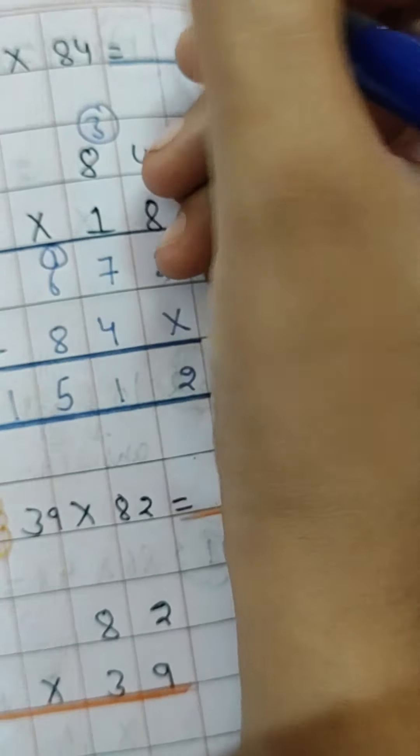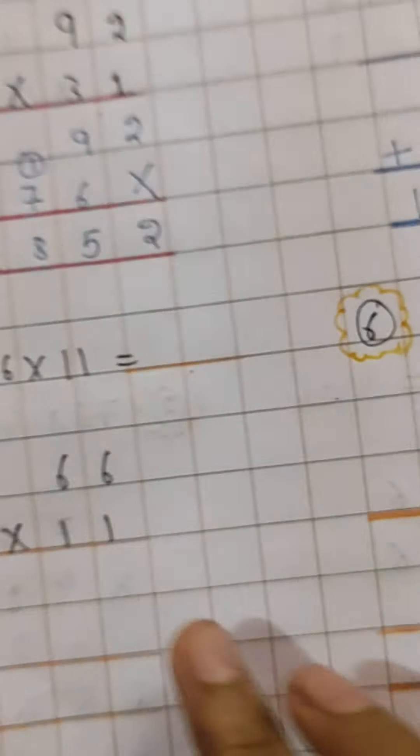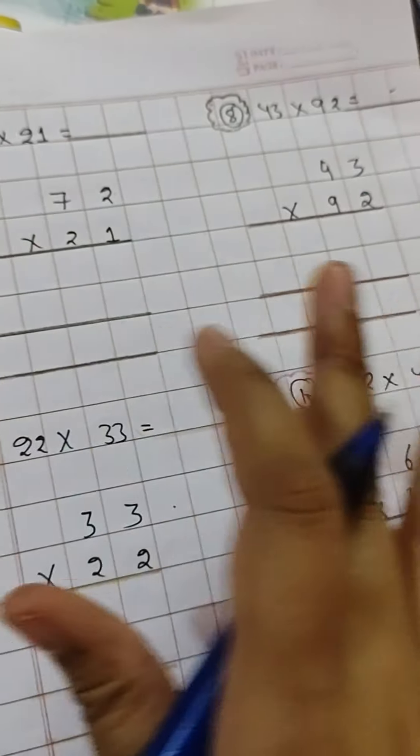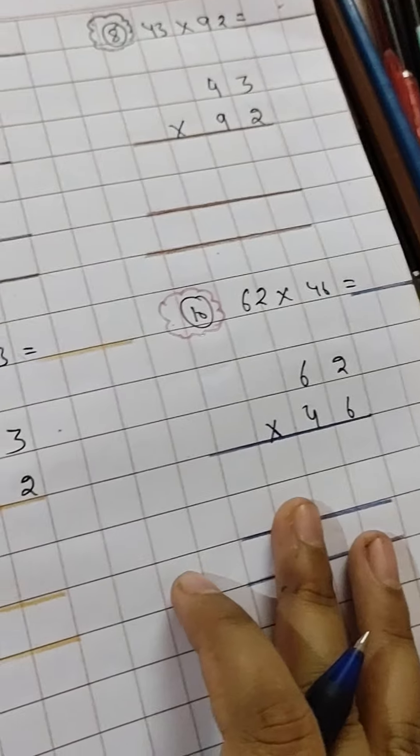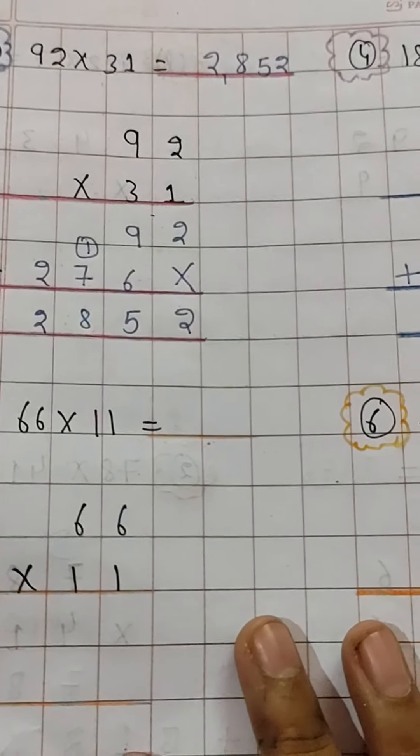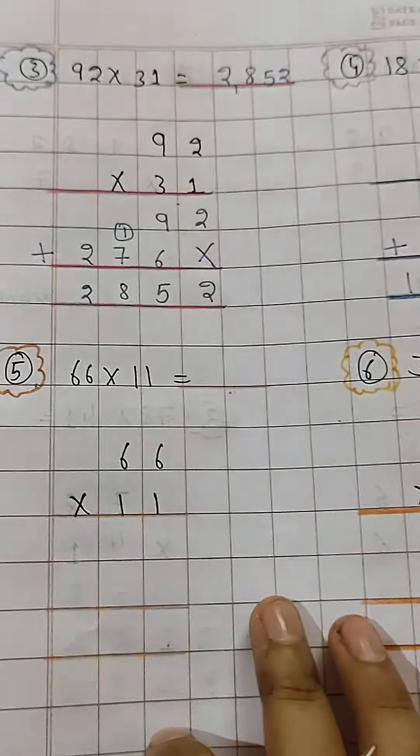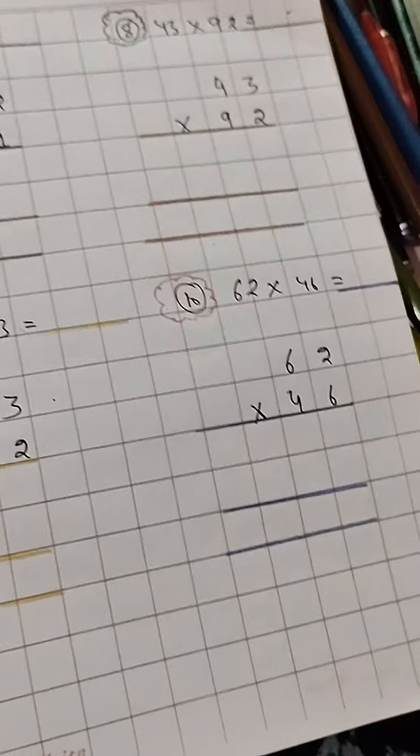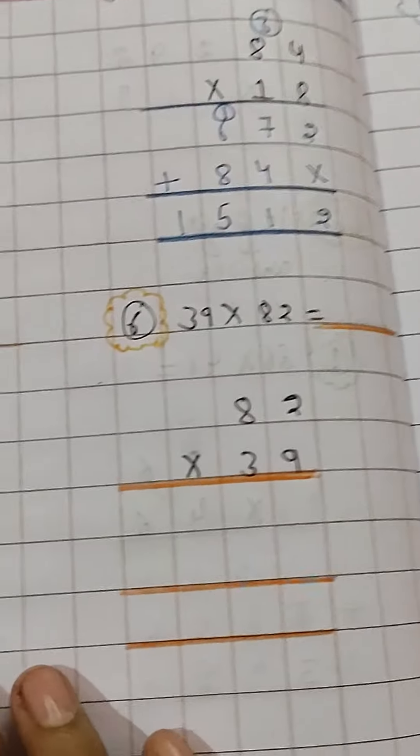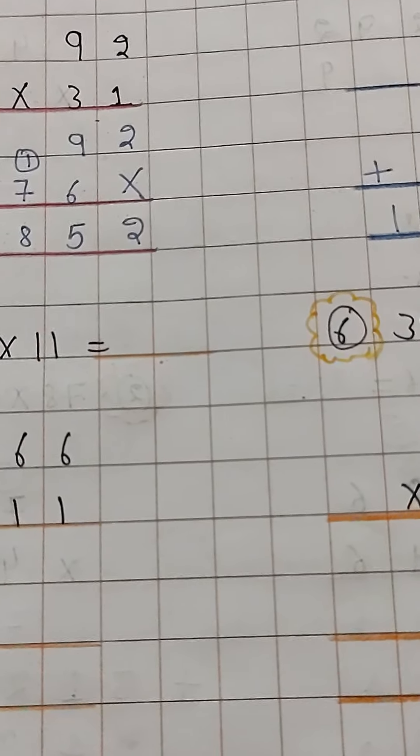Every other part, this one, this one, and this till 10 you will be doing it by yourself. These all are homework. Do it in a proper and neat and clean way. And then next time we will be starting our next chapter, that is division. I hope you people have understood multiplication properly and you can do everything. Okay, bye bye students.